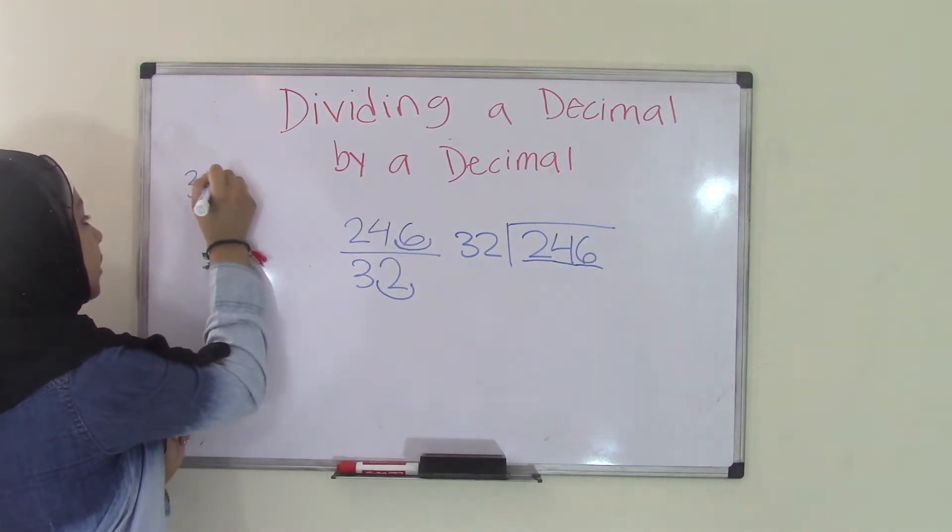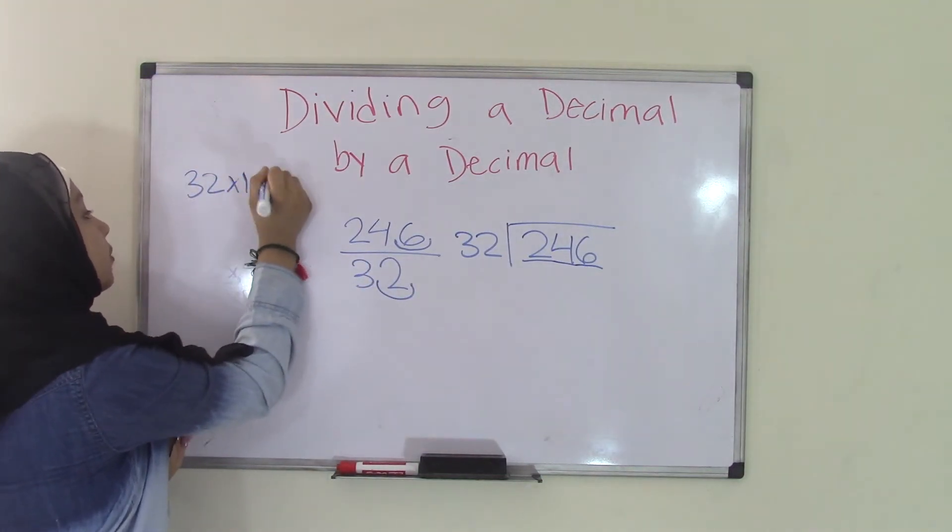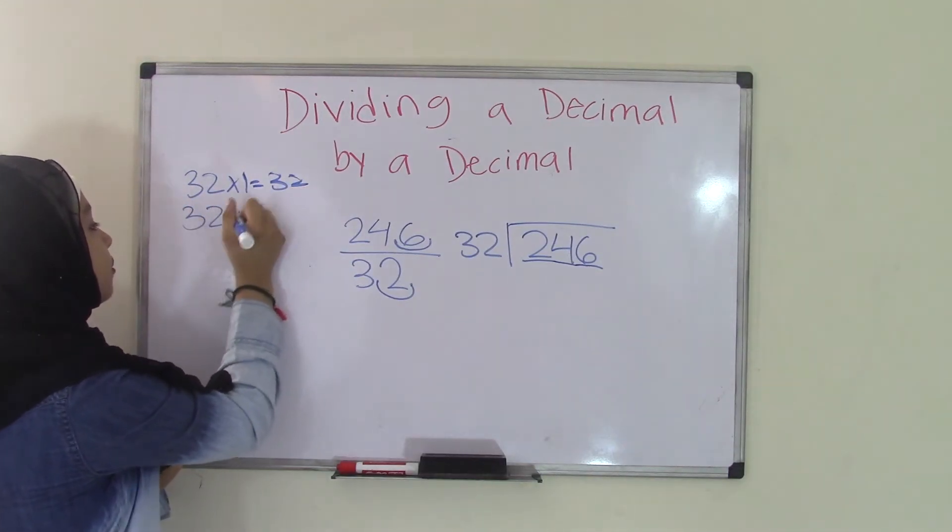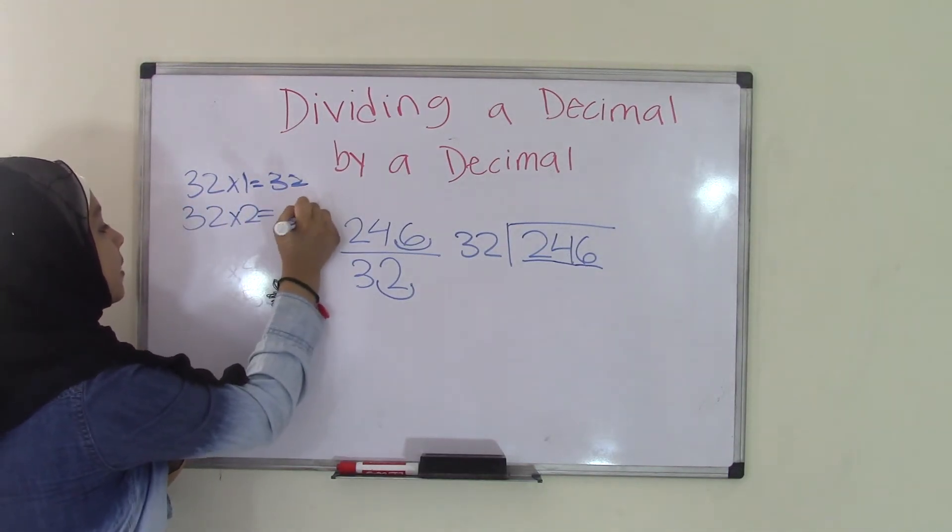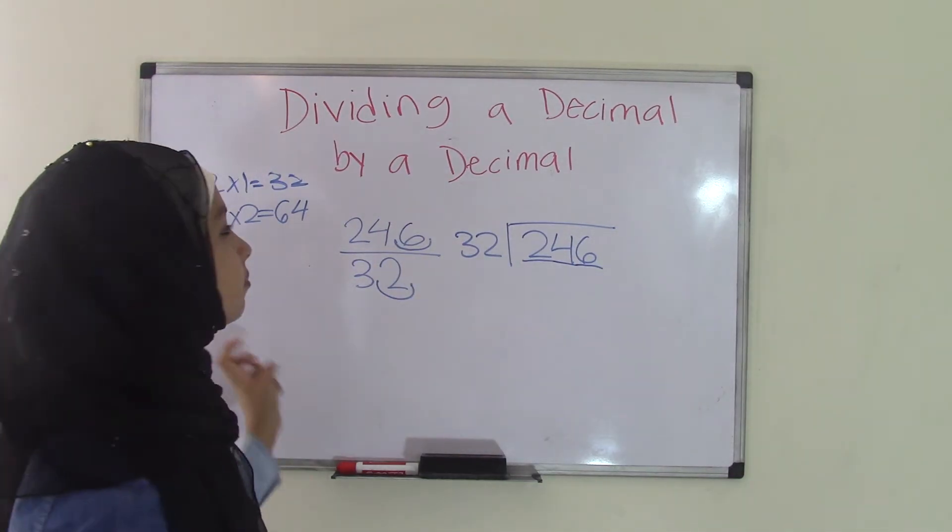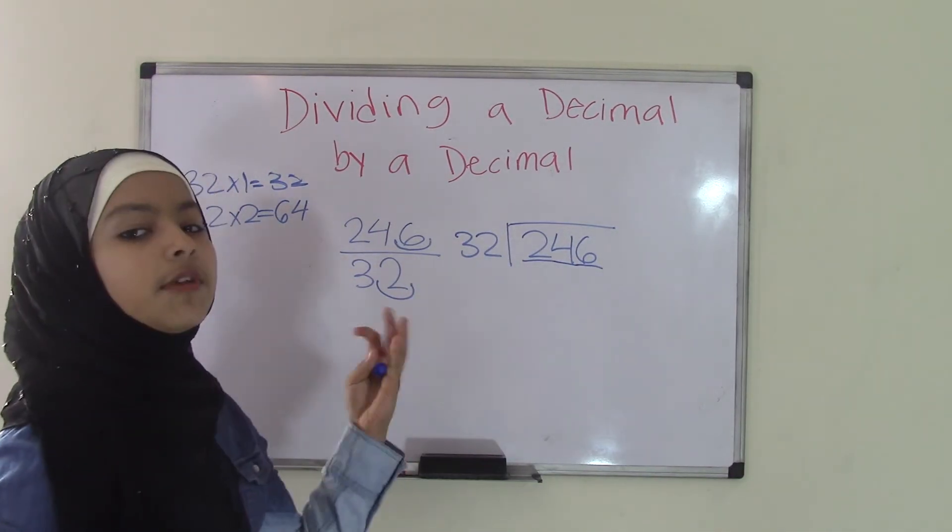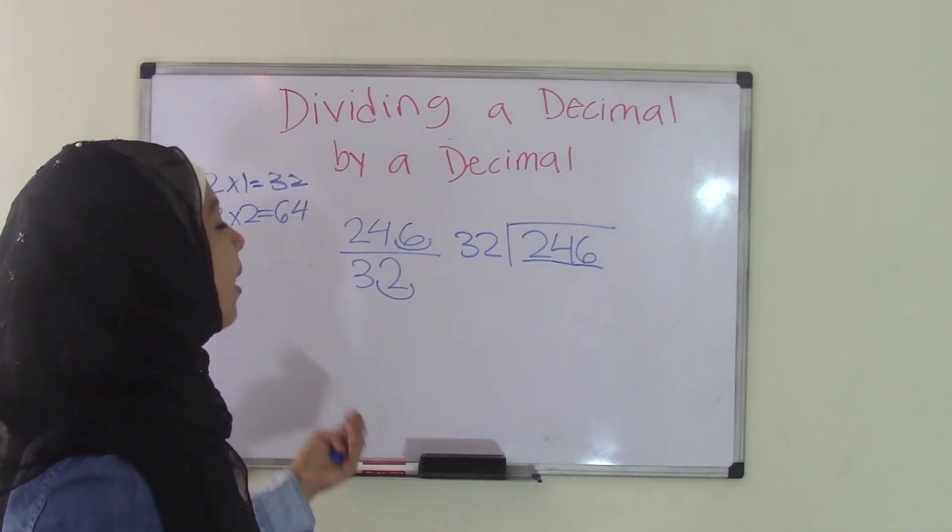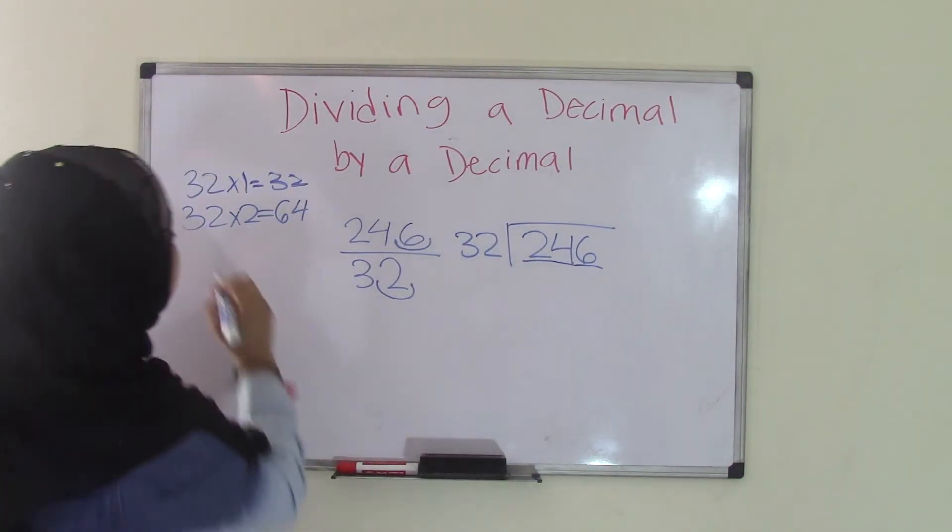So 32 times 1 is 32. 32 times 2 is 64. Now, we know that's a big number. So if we even were to write the entire times table, we'd still find our answer. That'd take us a long time. How about we skip up to maybe 32 times 5?